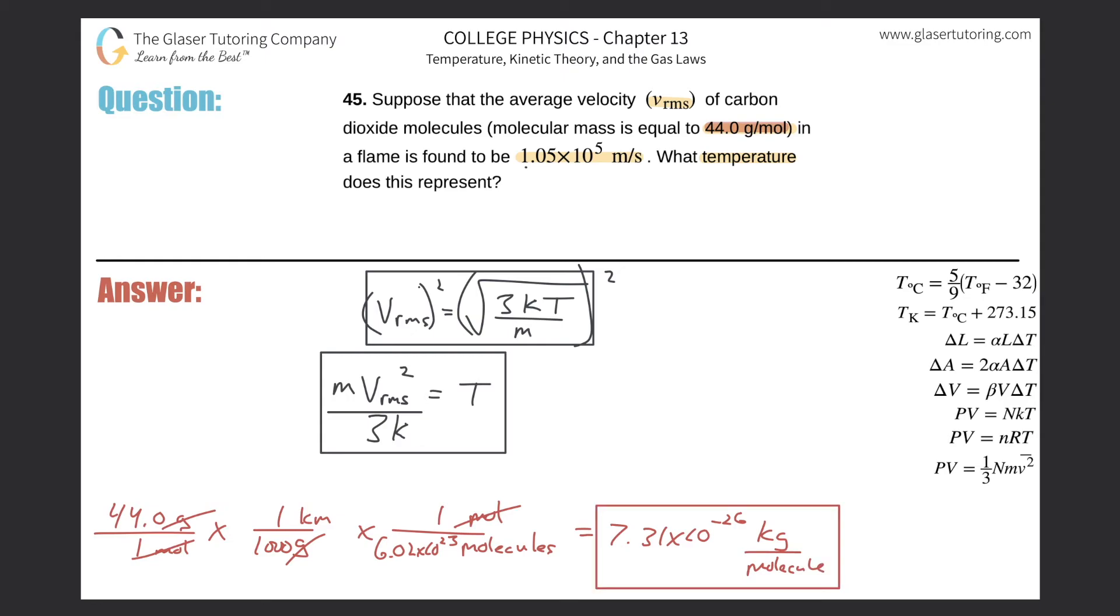This is the mass per molecule, and we have everything we need. Let's plug in the mass that we just found: 7.31 times 10^-26 multiplied by the root mean square velocity squared. Take that velocity of 1.05 times 10^5 and square that.